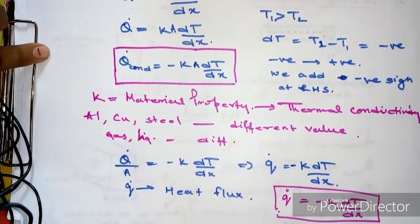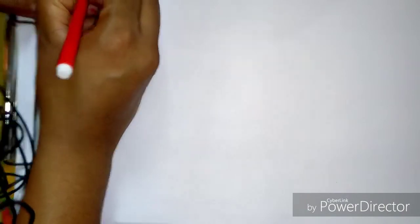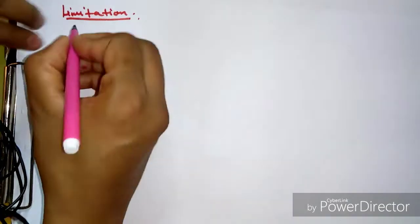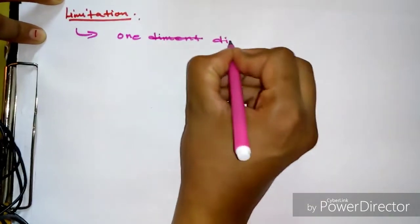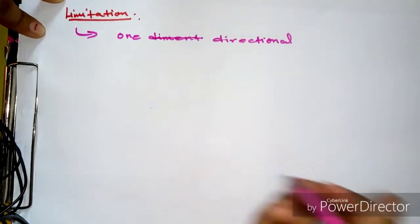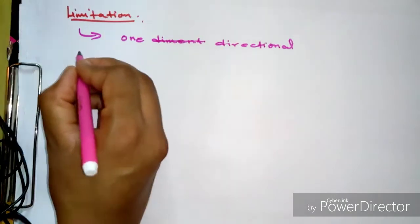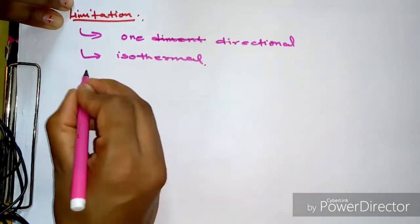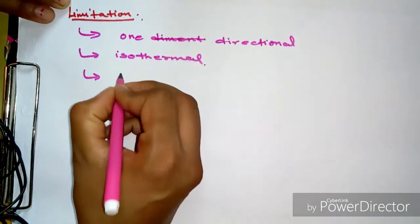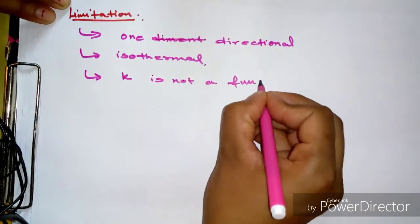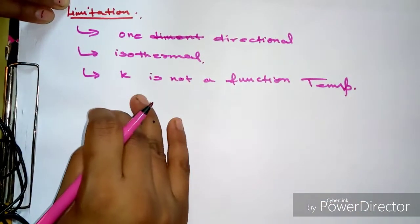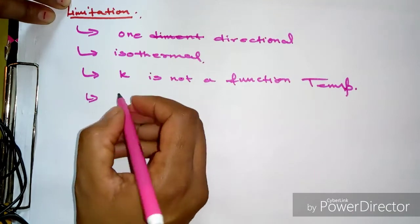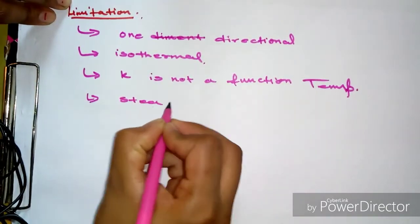The limitations of Fourier's law are: first, it applies to one-directional heat transfer only; second, it assumes an isothermal process; third, thermal conductivity k is not a function of temperature; and fourth, it applies under steady-state conditions, meaning the heat going in equals the heat going out with no heat accumulation inside the body. That is all for today's lecture, thank you.